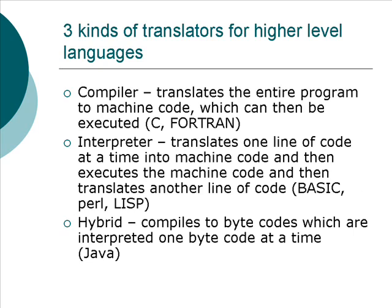There are different kinds of translators in the computer. There are compilers, there are interpreters, and there are hybrids. A compiler translates the entire program that you've written into machine code that can be executed.